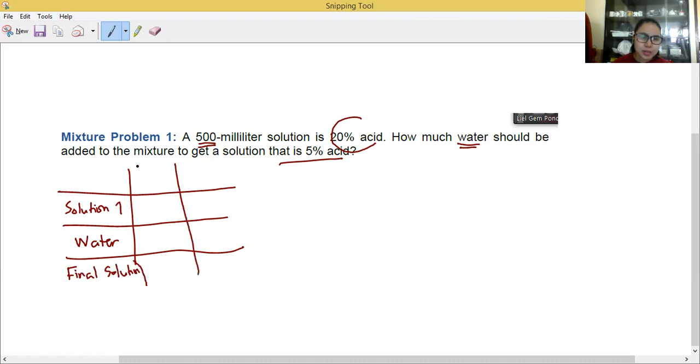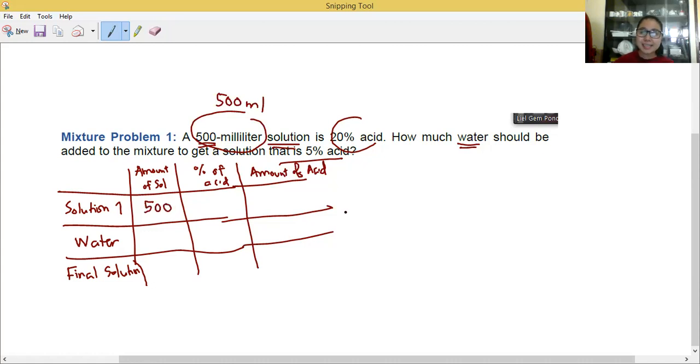Let's start. We have amount of solution, the next is the percentage of acid, then the last is the amount of acid or the amount of concentration. Our problem states that the first solution has 500 ml. So we write 500 here. And it is 20% acid, so 20% is the same as 0.2. How do we find the amount of acid? We need to multiply the two. So 500 times 0.2, that leaves you 100.